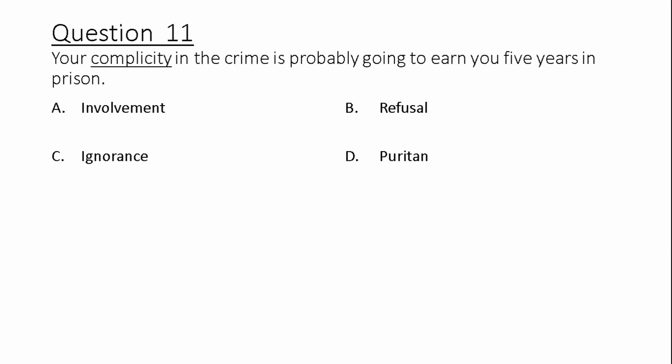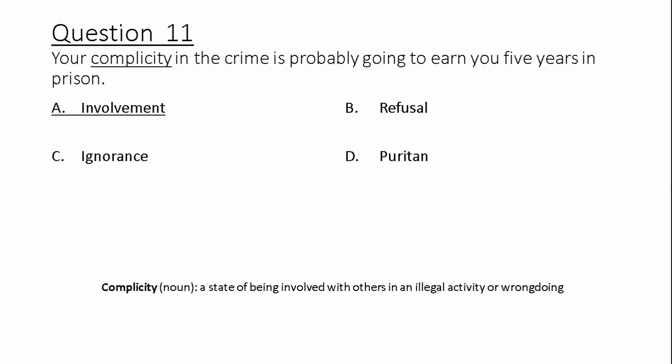Question 11. Your complicity in the crime is probably going to earn you five years in prison. A) involvement, C) ignorance, B) refusal, D) puritan. Complicity: noun, a state of being involved with others in an illegal activity or wrongdoing.